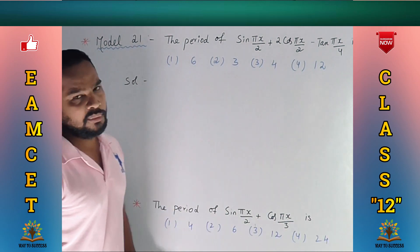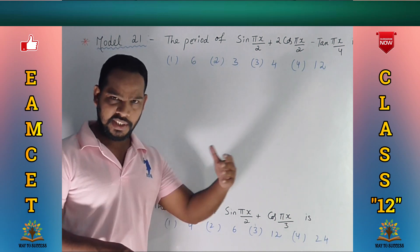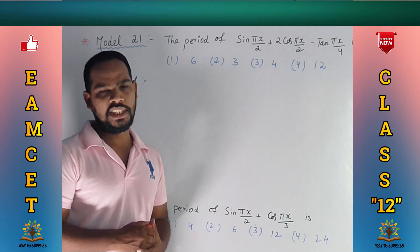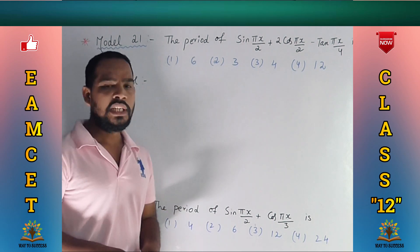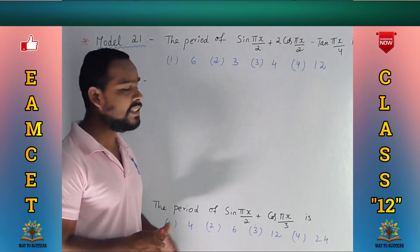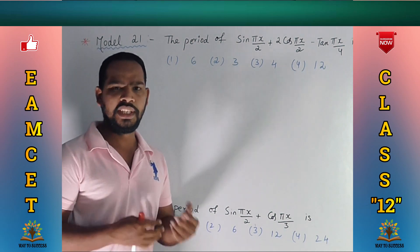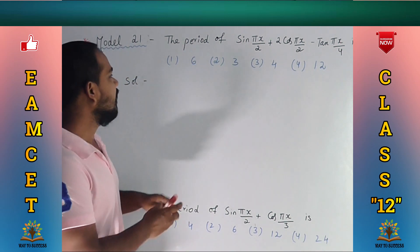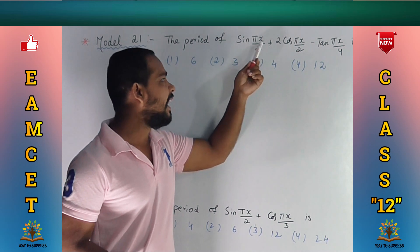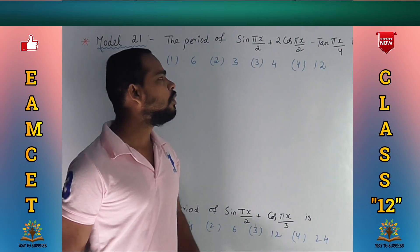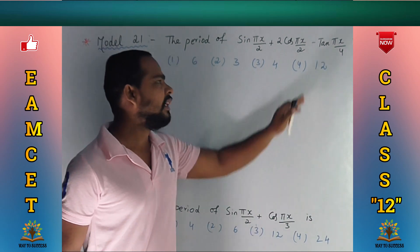In this chapter, we are going to cover the previous 10 models in the 12th class. Now we are going to explain model number 21. The question is: find the period of sin(πx/2) + 2cos(πx/2) - tan(πx/4).